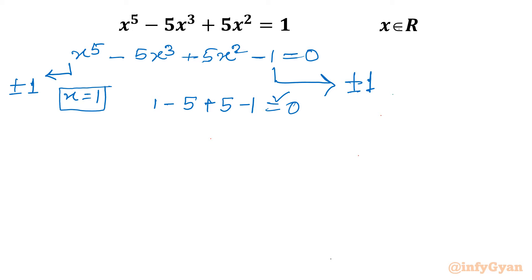Now I will use synthetic division. I need to write the coefficients of this quintic equation: 1, 0, minus 5, 5, 0, and minus 1. The zeros appear because there is no x⁴ term and no x term in the quintic equation — the equation does not have any x⁴ or x term, so those coefficients are 0.